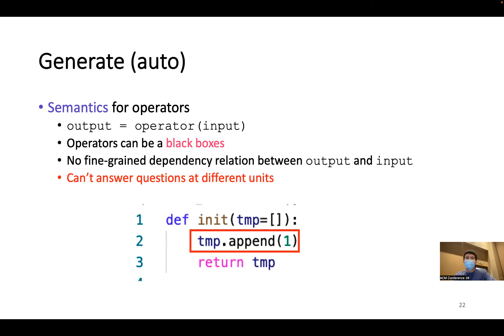And in order to generate high quality provenance, we need to associate semantics for operators, because operators in scripting languages can be black boxes. They can be even written in other program languages. So there is no fine-grained dependency for the interpreter to infer between the outputs and inputs. And therefore, the interpreter cannot answer questions at different units. For example, for the append function, the interpreter doesn't know anything other than that the output as a whole depends on the input as a whole.